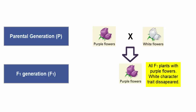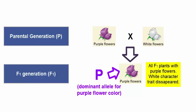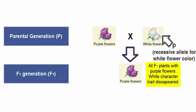So, the allele that's responsible for purple color is clearly and obviously dominant over whatever allele is responsible for white color. And that's what we are calling the principle of dominance.